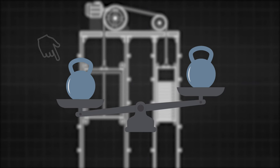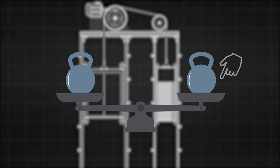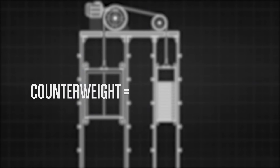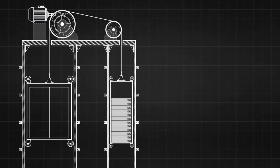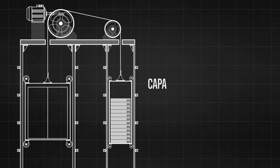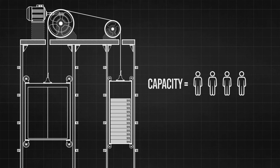Weight of counterweight is determined by adding the weight of a car and half of the total capacity of elevator. Let's understand this by using a simple example. Let's suppose the full capacity of elevator is four people. According to the formula, counterweight is equal to car plus two people.